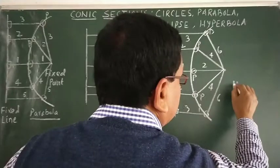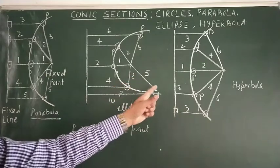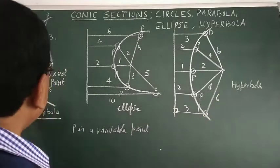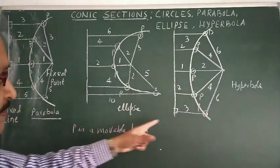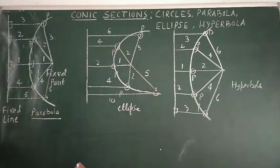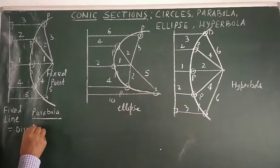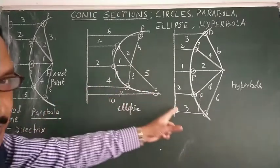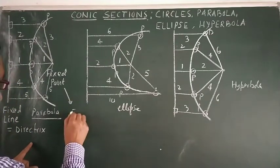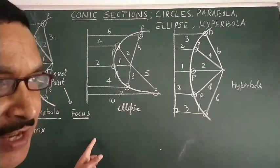This is called the hyperbolic path — hyperbola. So the three types of movements are possible: parabolic, elliptical, and hyperbolic. These are the three conic sections: parabola, ellipse, hyperbola. One more thing to note: the fixed line is called the directrix in all three conic sections, and the fixed point is called the focus.